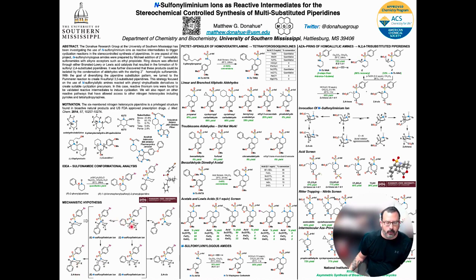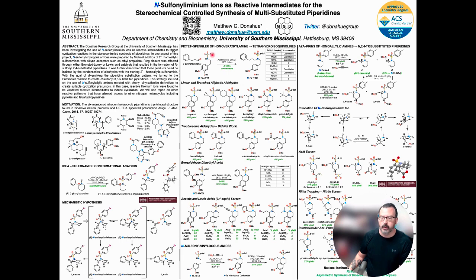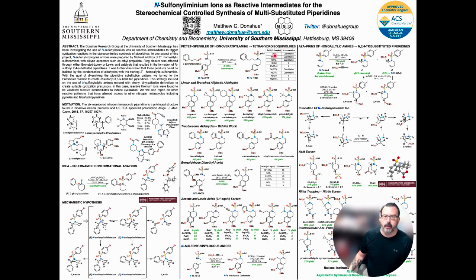The minor product would be the cis, which would proceed through the more sterically encumbered Z-configuration, with trapping of the conjugate base in an equatorial fashion. We set out to investigate this first using a very electron-rich pendant alkene embedded in homoveratrilamine, starting with the para-toluenesulfonyl sulfonamide. For our model aldehyde we used 3-phenylpropanal, and we performed an acid screen with Brønsted-Lowry acids and then transition metal acids with triflate ligands.